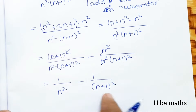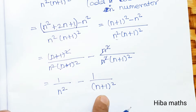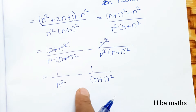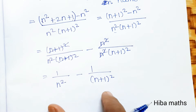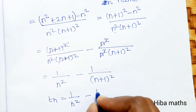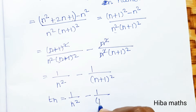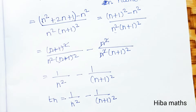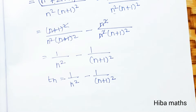Now it is expressed as a difference of two terms. Therefore, tₙ = 1/n² − 1/(n+1)². Everyone understand? Thank you so much for watching.